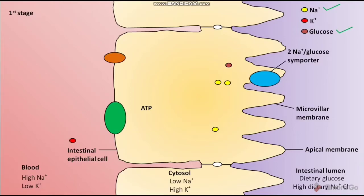As a result of this symport, one glucose and two Na+ ions reach the cytosol of the intestinal epithelial cell. The glucose is imported via the 2 Na+/glucose symporter against its concentration gradient. The intestinal epithelial cell also has a basolateral, or serosal, membrane.